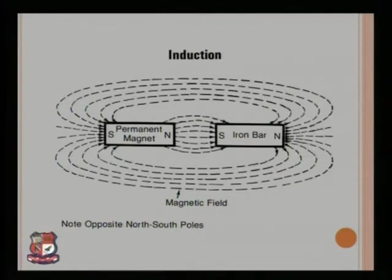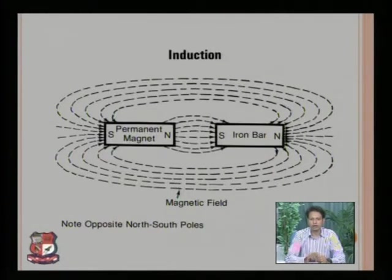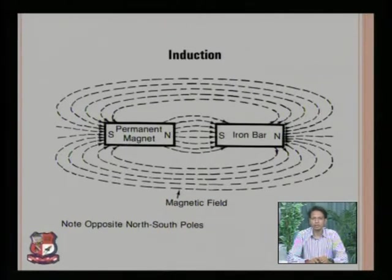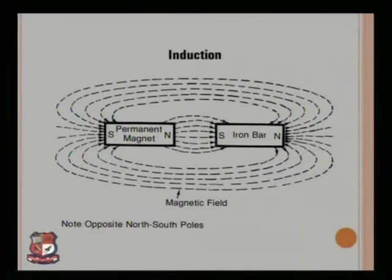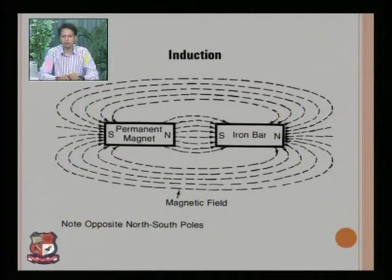You can observe in the diagram where there is one bar magnet with two poles — one north pole and one south pole. Nearby you can observe the magnetic field lines shown in dotted lines. The magnetic field lines are emerging from one pole and entering into the other pole, that is from north pole towards the south pole.